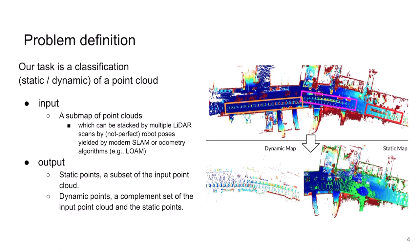Our target problem is, in the offline, making a static map from a noisy point cloud. This can be considered as a classification. For point-wise, we need to classify each input point as static or dynamic.